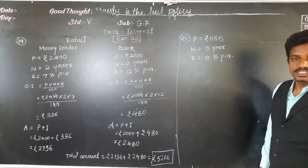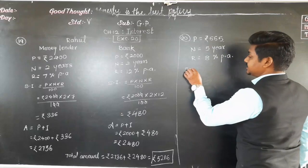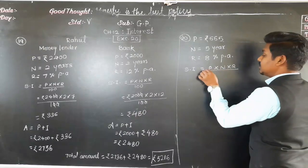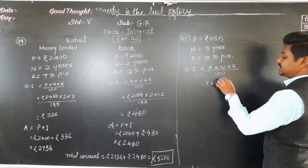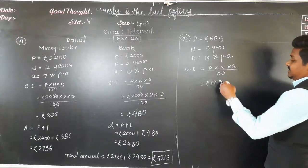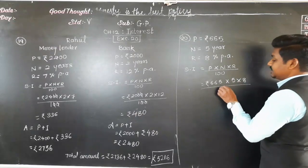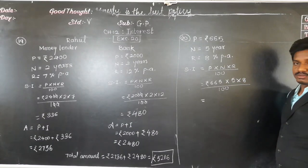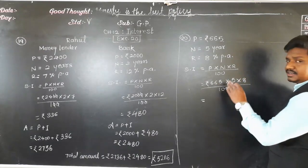To find the amount, we first have to find the simple interest. Simple interest equals P into N into R upon 100. Here P is rupees 665 — notice there are no two zeros at the end of the principal, so this calculation will be a little challenging. We will first multiply all the numbers and then divide by 100, since division by 100 is easy.